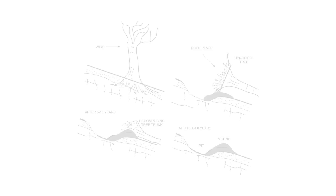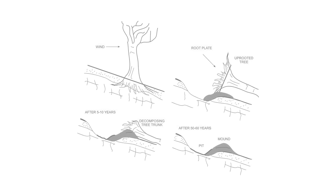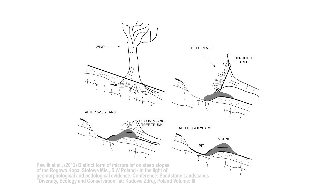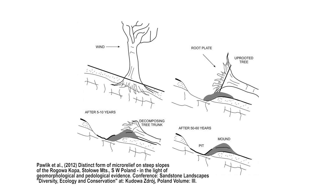The sequence of root plate dynamics has been well characterized on a temporal scale spanning decades. Throughout the sequence, soil horizons are reworked due to weathering processes such as particle fall, sheet wash, and rain splash.